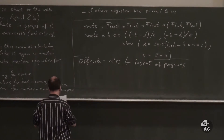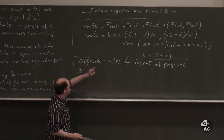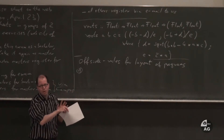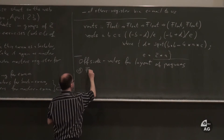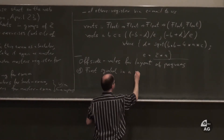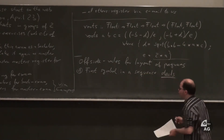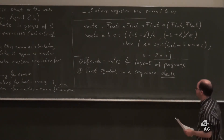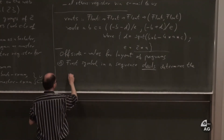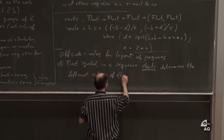Rule one: the column of the first symbol in the first declaration determines the leftmost column of that declaration block. So the first symbol in a sequence of declarations determines the left border of the declaration block.